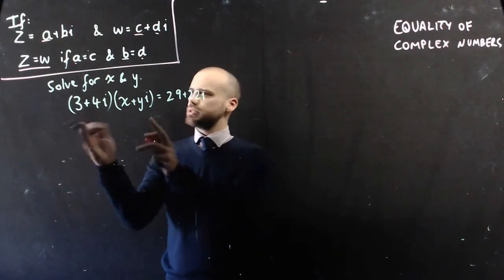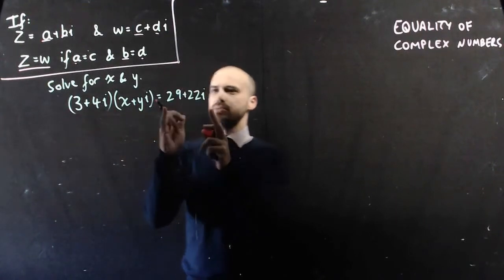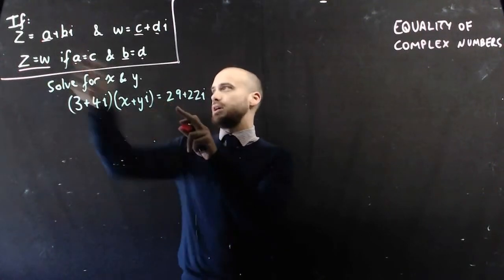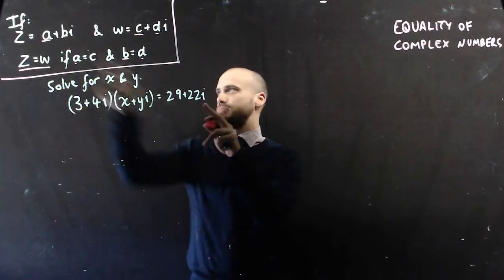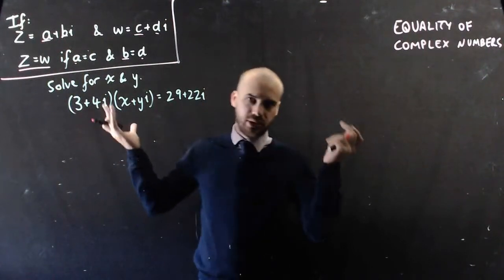I want to turn this into something that looks more like that, so I can separate the real and imaginary components. Using FOIL, I could say that this is equal to 3x, 3yi,